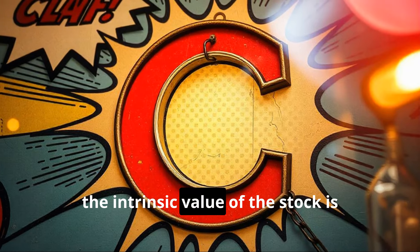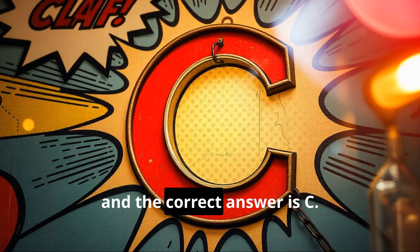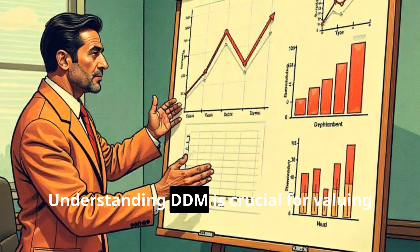So the intrinsic value of the stock is $42, and the correct answer is C. Understanding DDM is crucial for valuing companies with stable, predictable dividend growth.